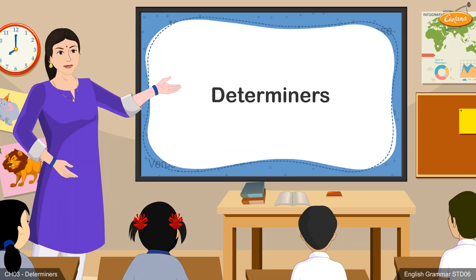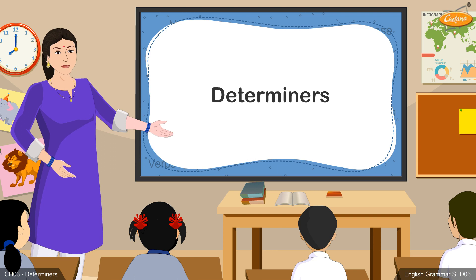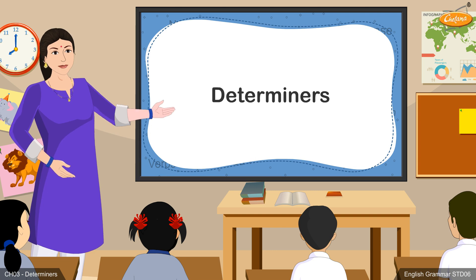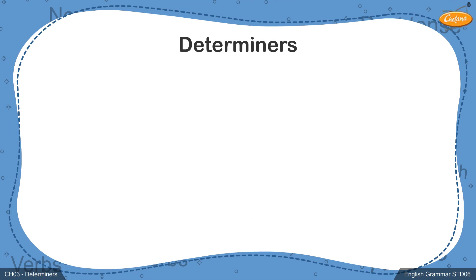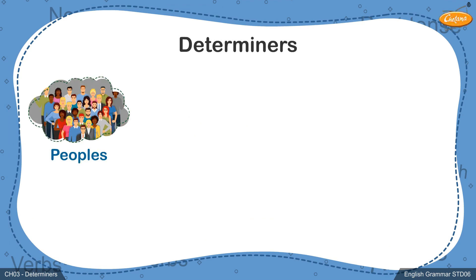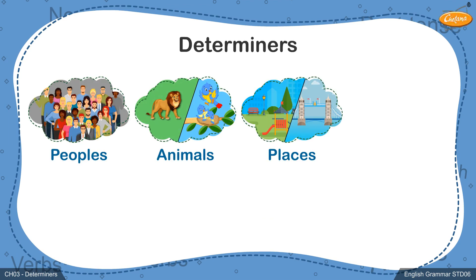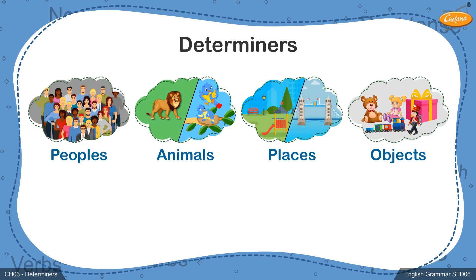Topic 3: Determiners. Introduction — Good day to you, students! We know we refer to a lot of people, animals, places and objects when we talk to someone or write sentences.